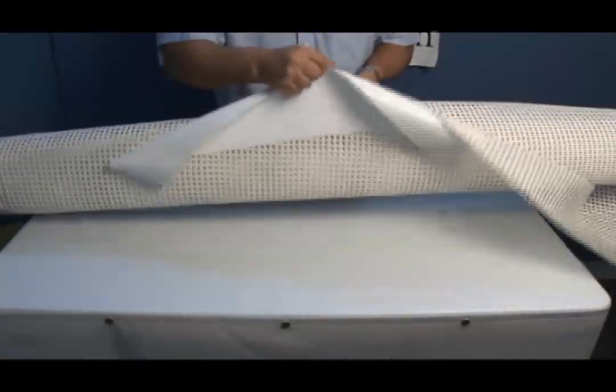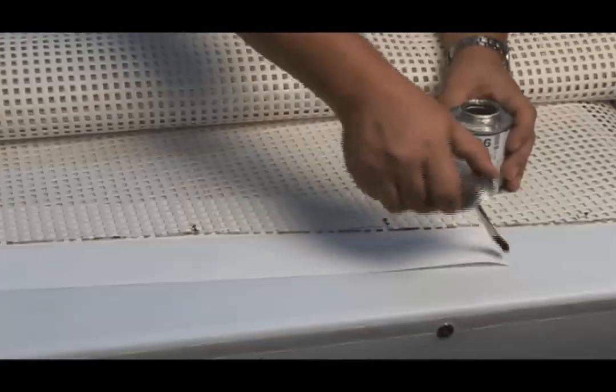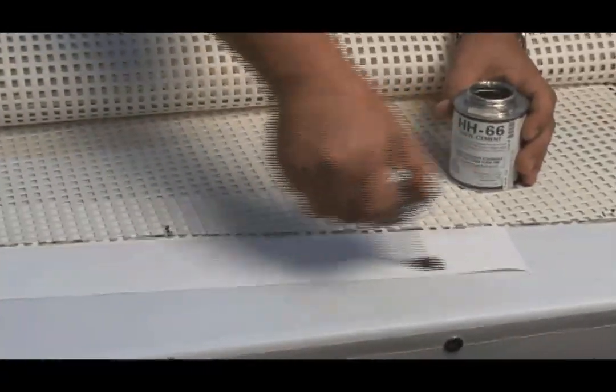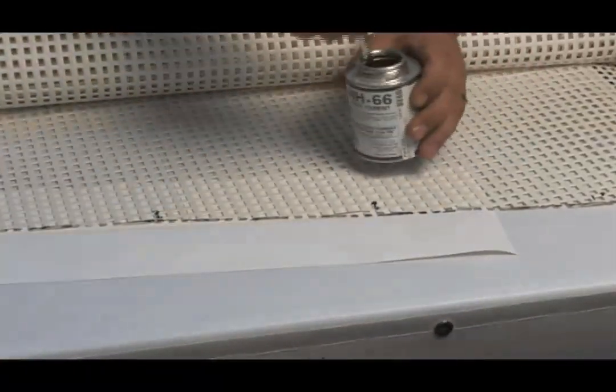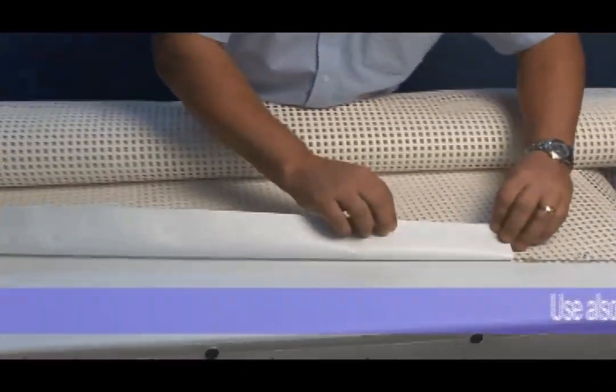You can almost lift this whole super heavy duty tramp up just by that facing, so you know it's going to hold well when you go to your sewing machine and sew it. To complete it off, we'll just put HH-66 vinyl cement on the other side of this facing and then fold it over the top and secure it.